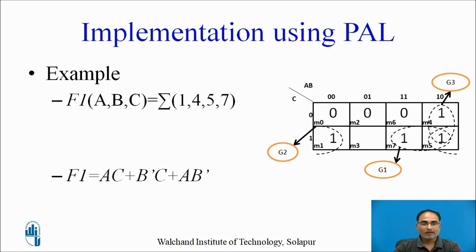Let us implement a simple Boolean function. We have a three-variable function f1 with minterms 1, 4, 5, and 7. Instead of using minterms directly, we first minimize the function using a Karnaugh Map (KMAP). After placing the minterms in the KMAP, three groups G1, G2, and G3 are formed, giving: f1 = AC + B'C + AB'. Here AC is group 1, B'C is group 2, and AB' is group 3.